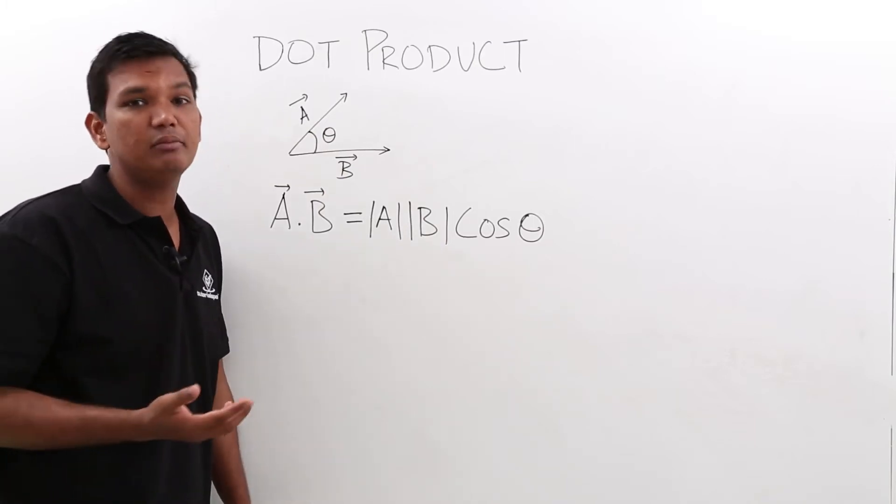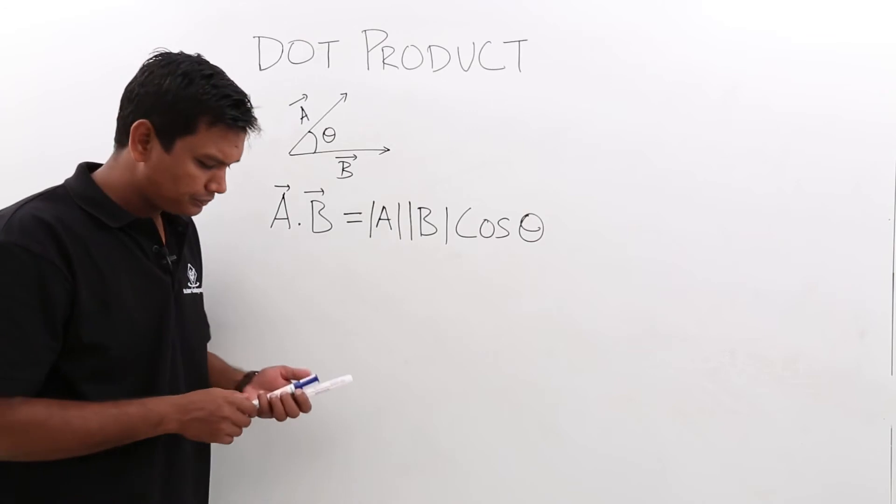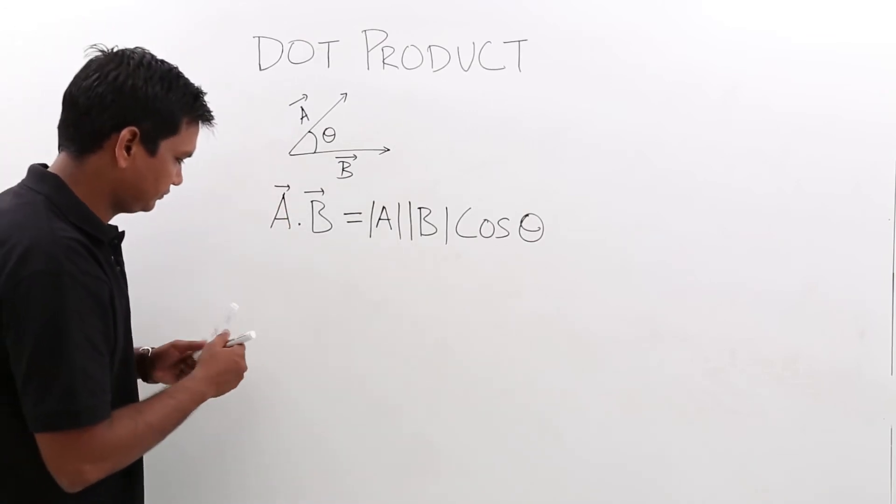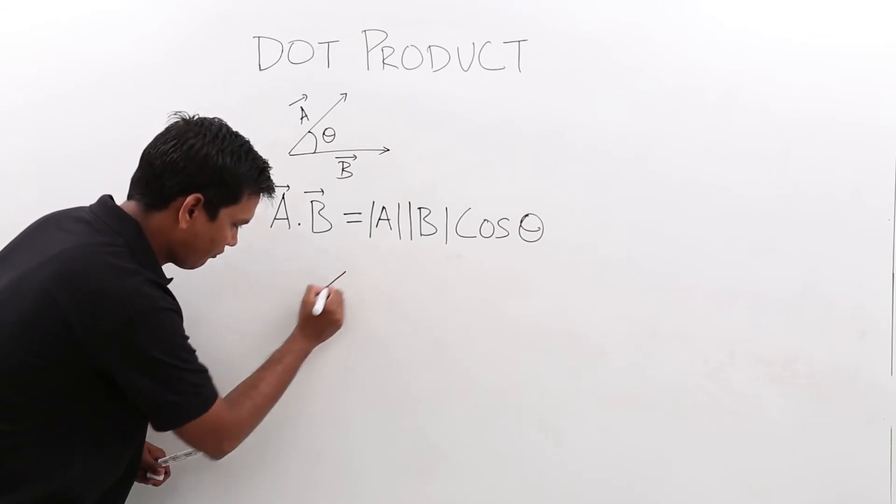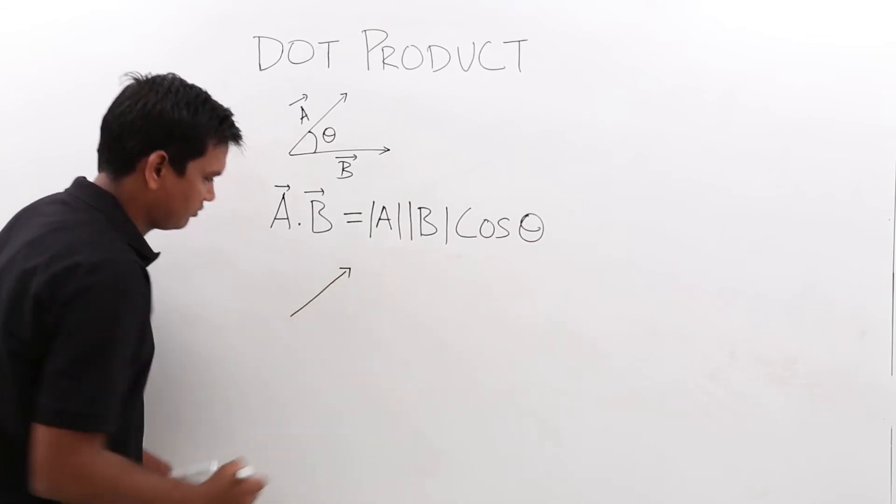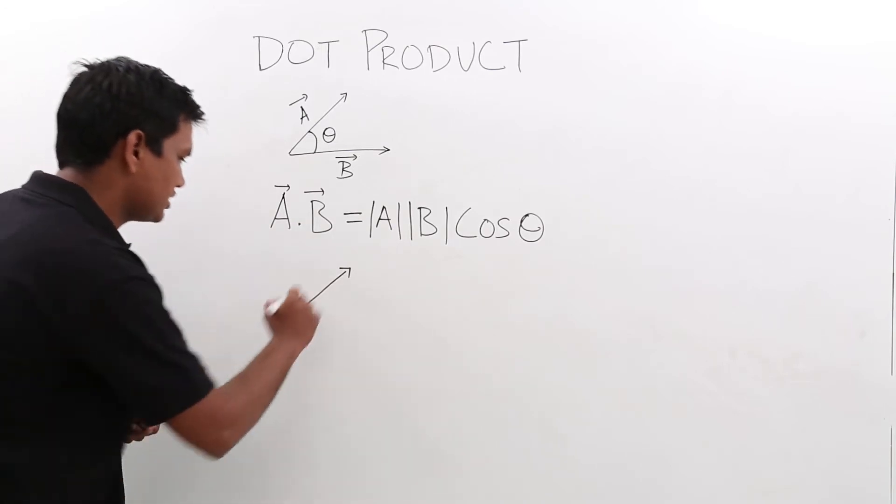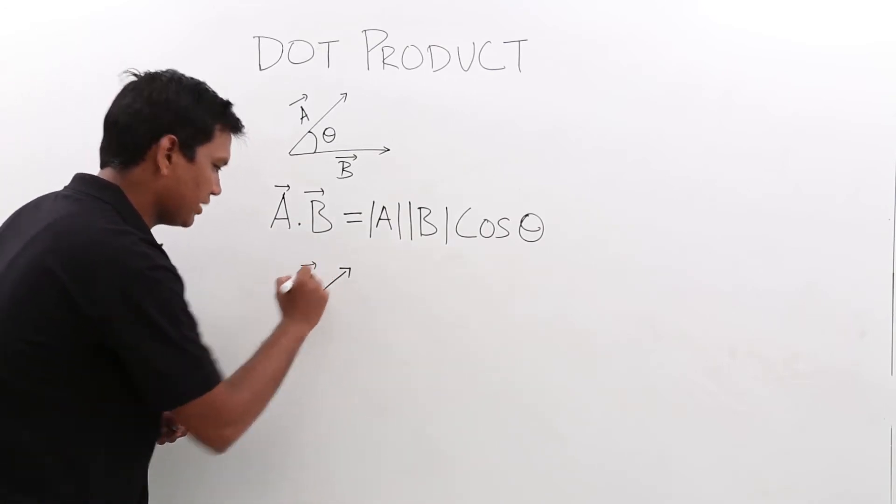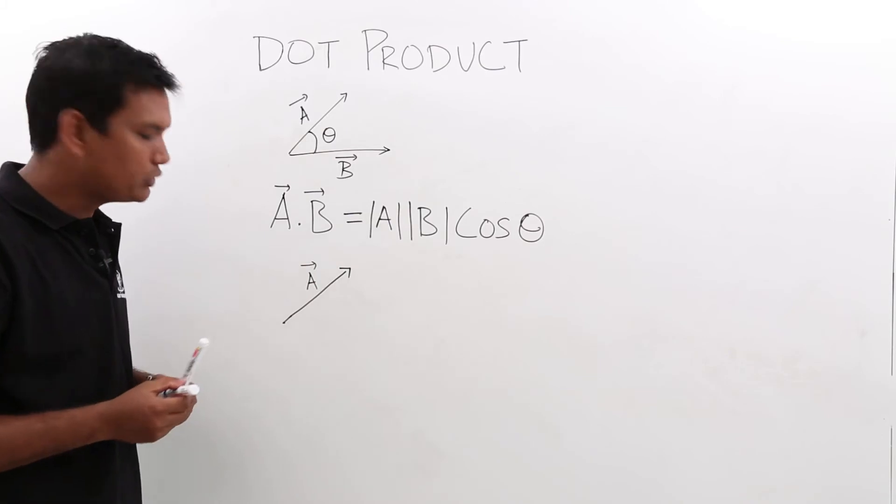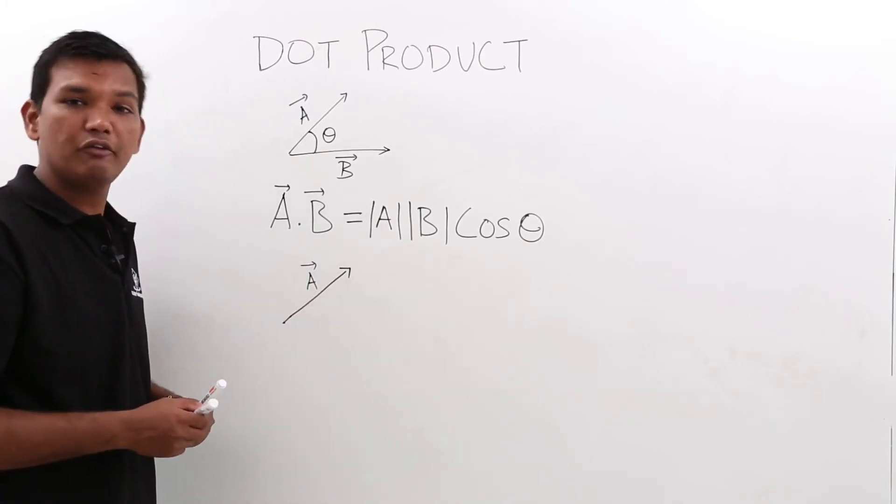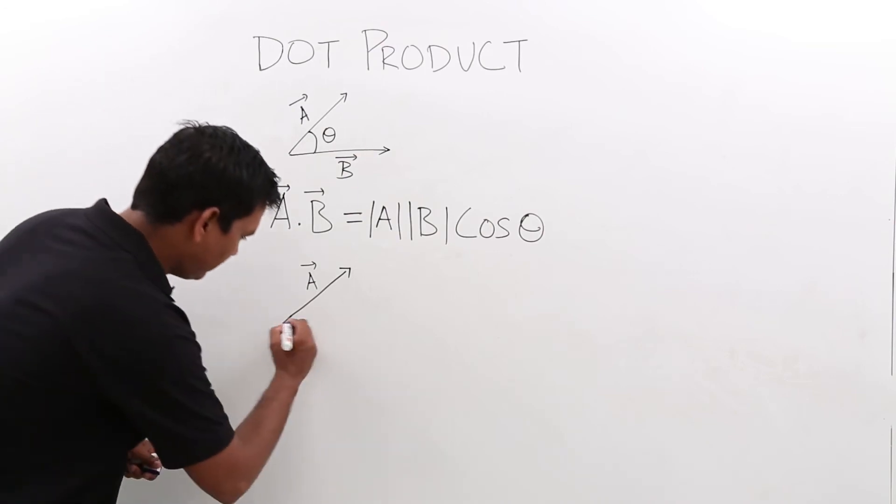Let us try to understand the physical meaning of dot product. Let me redraw these two vectors. So this is my A vector. Now, as you know, I can break this vector into the horizontal and vertical components. So let me break it down.